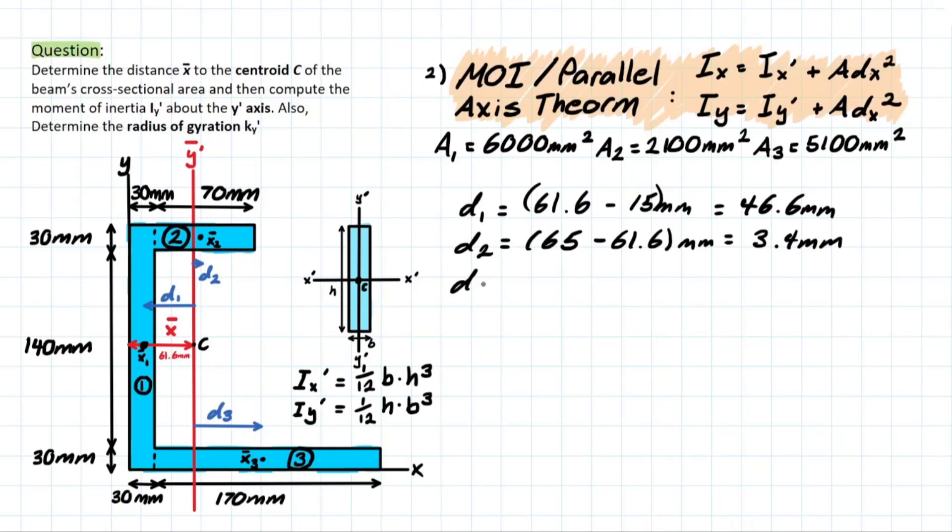And then D3, very similar thing. We're taking that value 115 from before, subtracting that distance from Y to the centroid and getting 53.4 for that value.